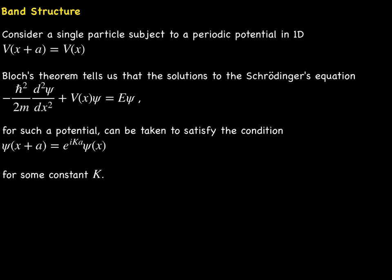We place one electron in such a periodic potential in one dimension. Then, according to Bloch's theorem, the solutions to the Schrödinger's equation for such a potential can be taken to satisfy the condition ψ(x+a) equals the Bloch factor times ψ(x).